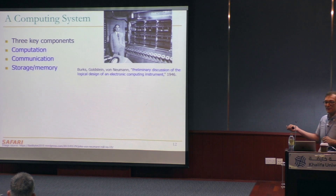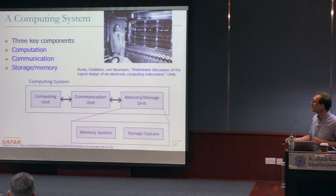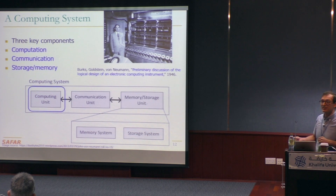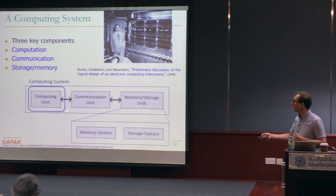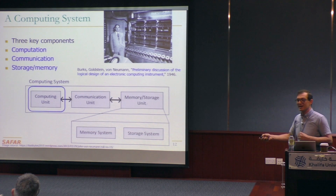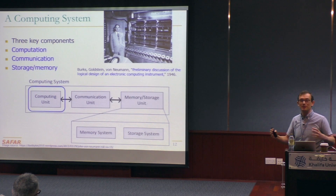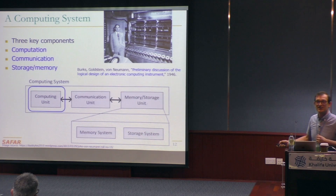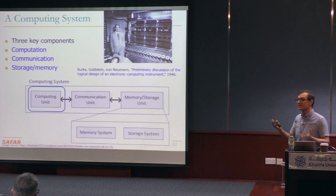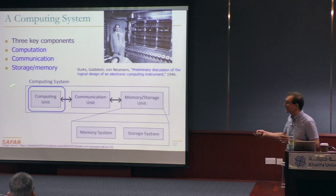If you look at a computing system, it consists of three components: computation, communication, storage, and memory. Over more than seven decades, we've heavily optimized the computing unit. The computing unit requires data to compute, but we have not optimized the other parts of the system. As a result, we have a completely imbalanced system today, and that's why we don't have a good way of dealing with data.